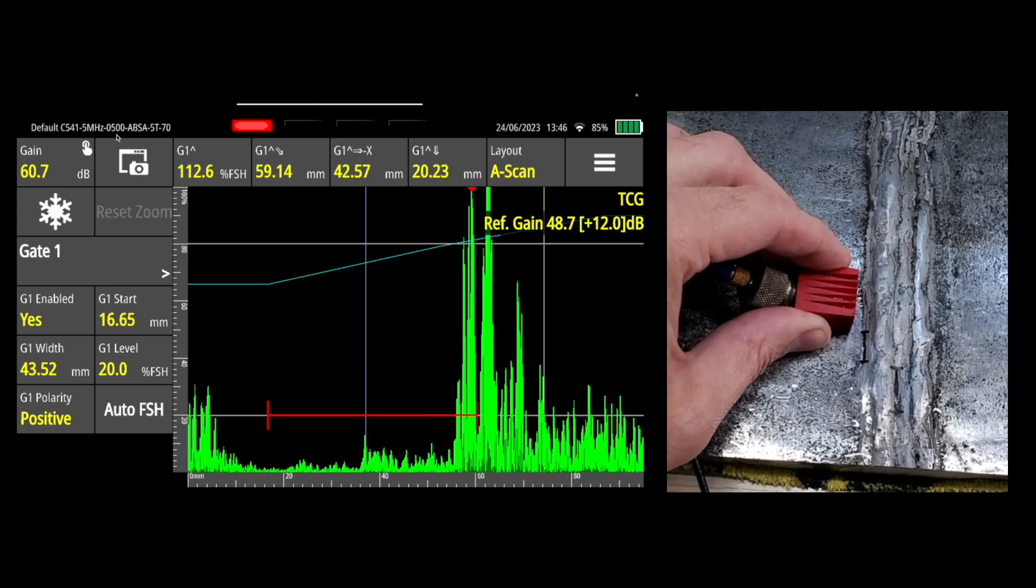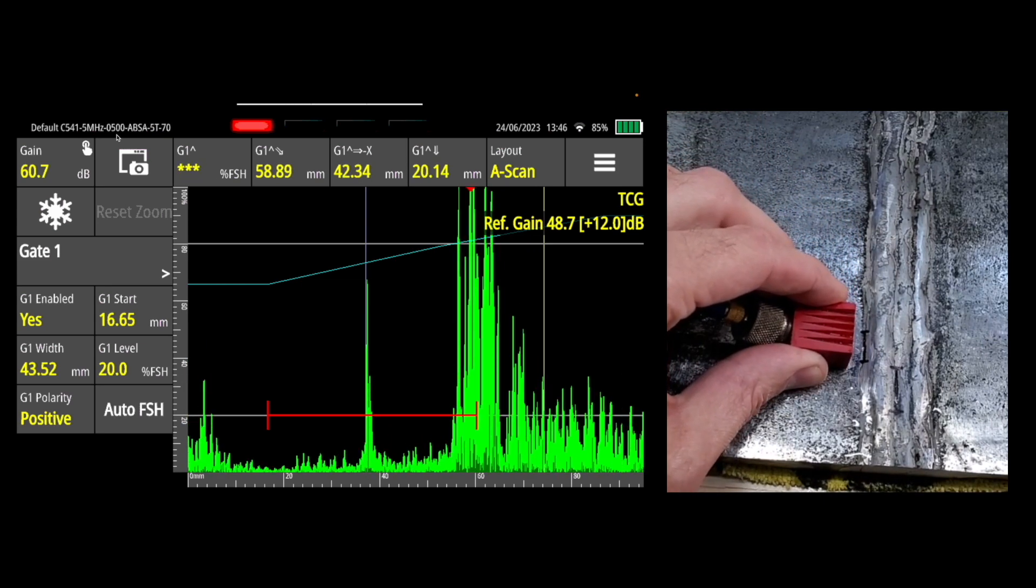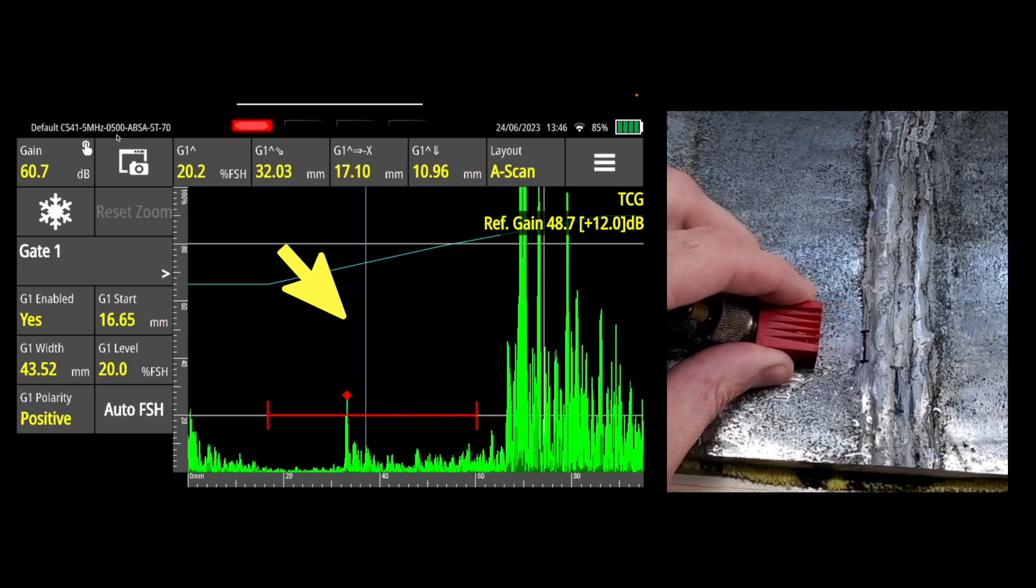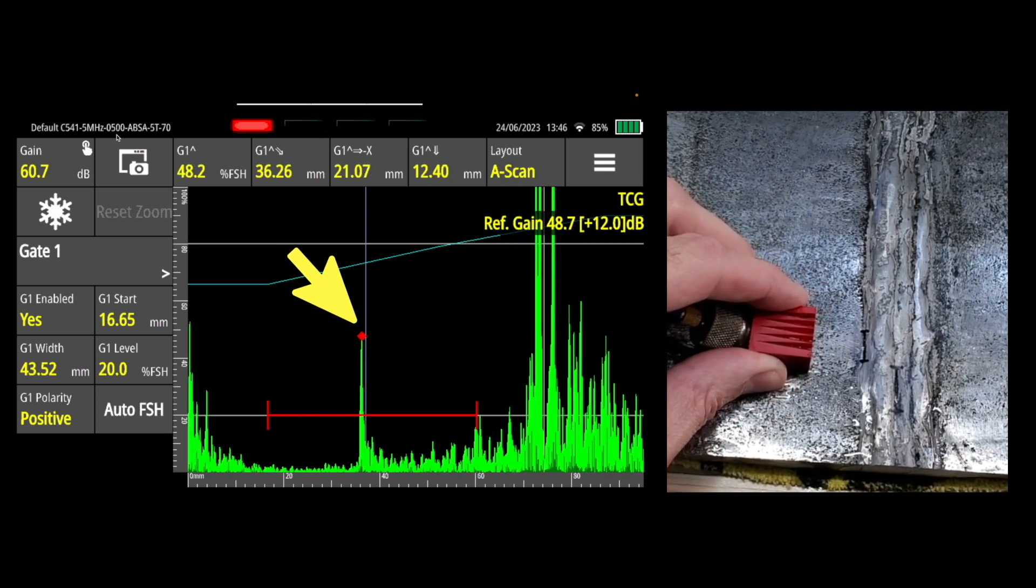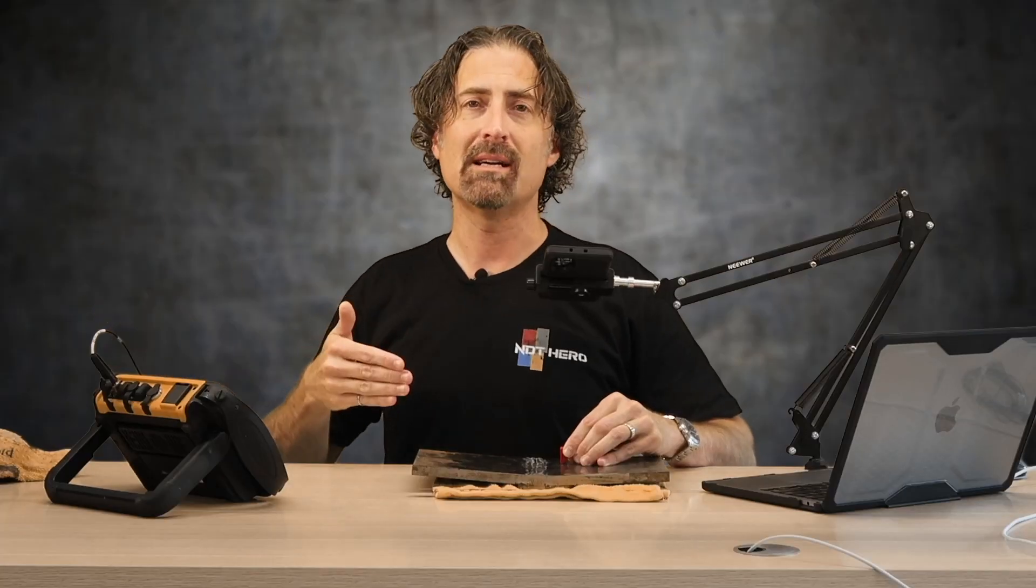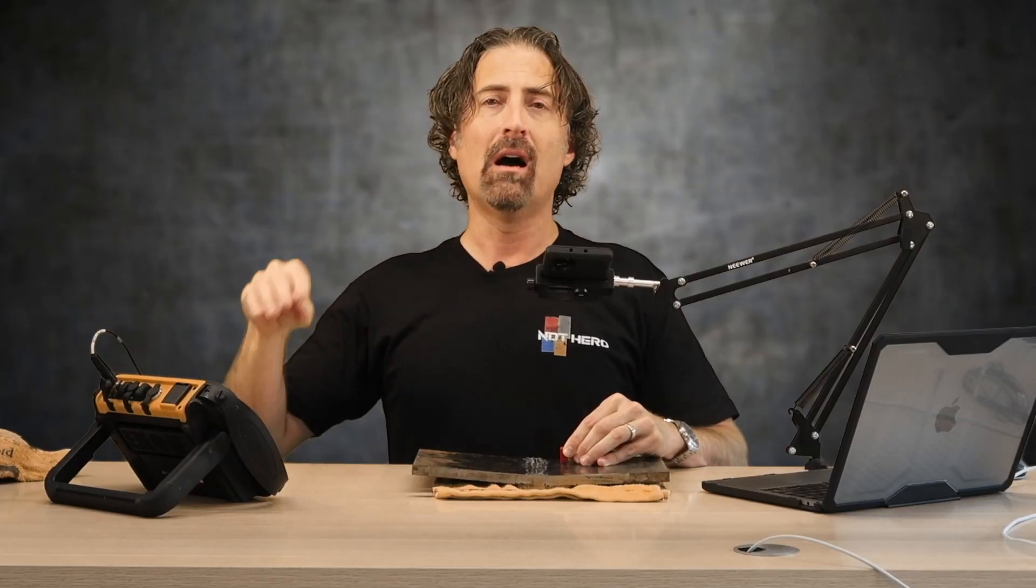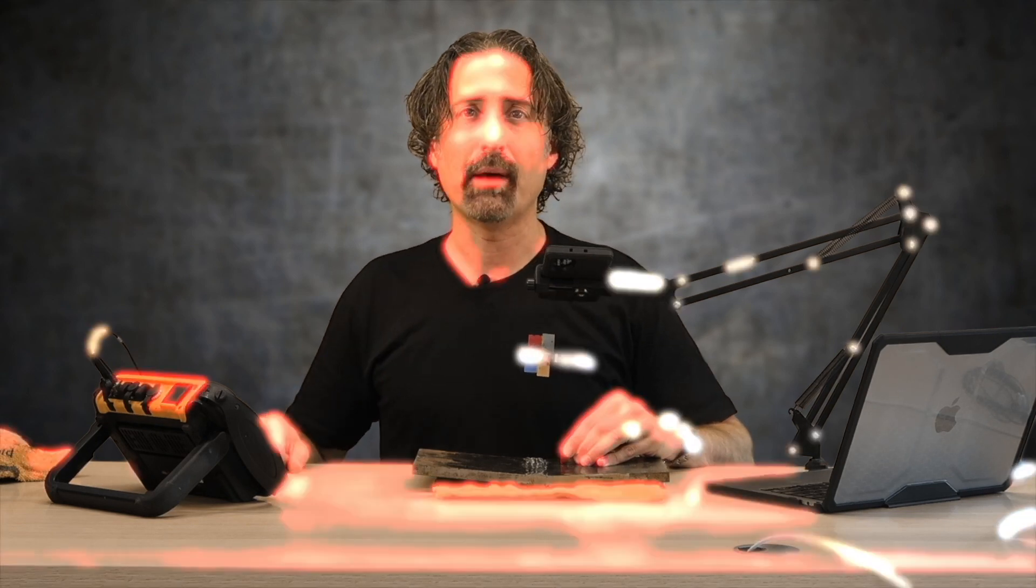And as I pull down to this position, still there, no problems. But as I pull the probe back, there's that twin peak. One, two right there. And it's that first one, which is the near side signal. And that's indicative of a little bit of root lack of fusion or root lack of pen.